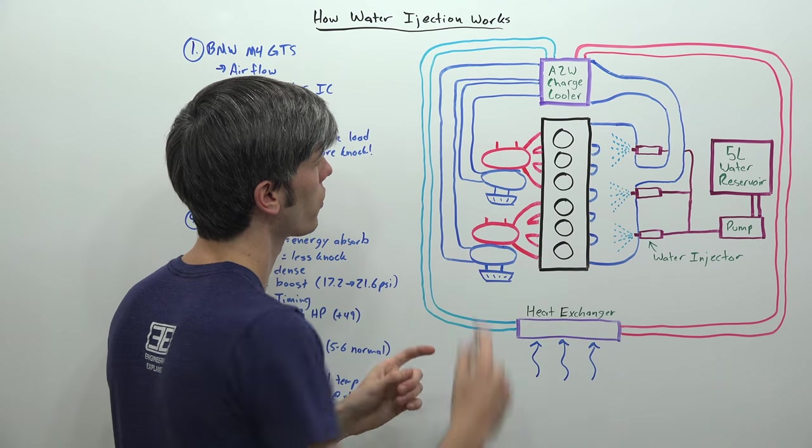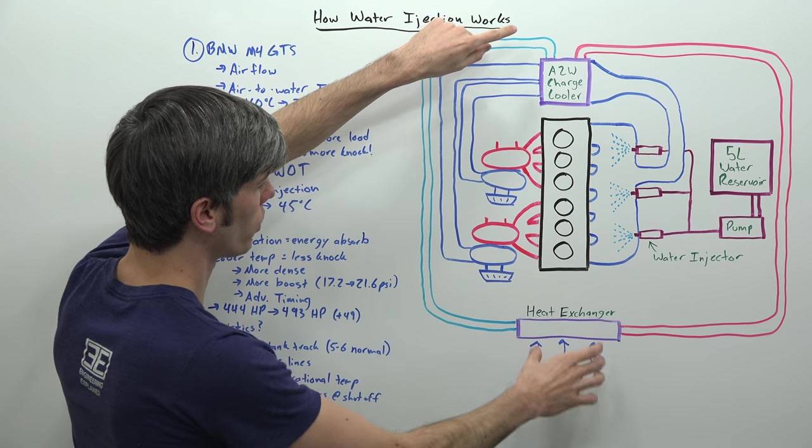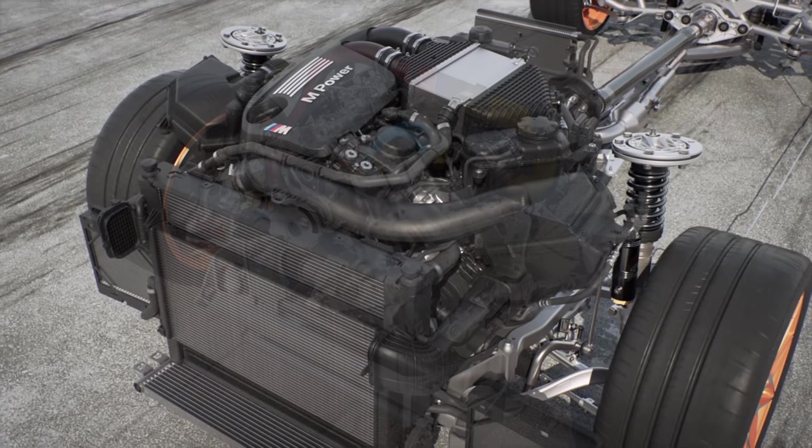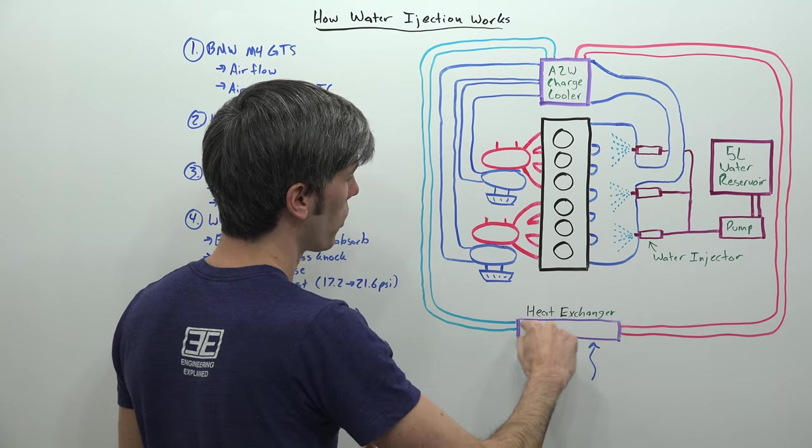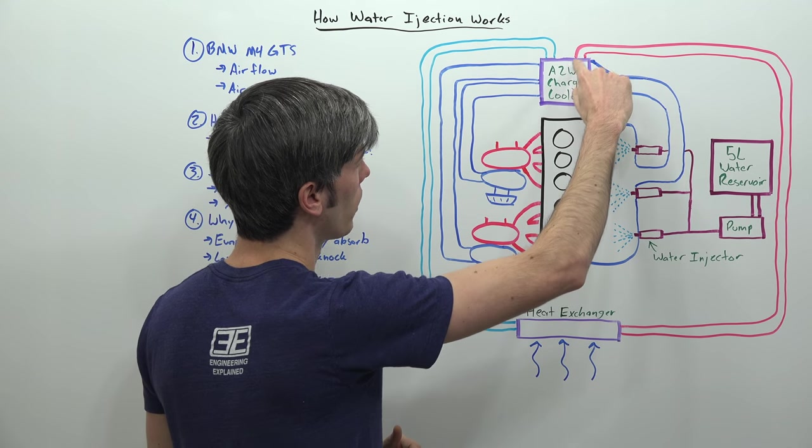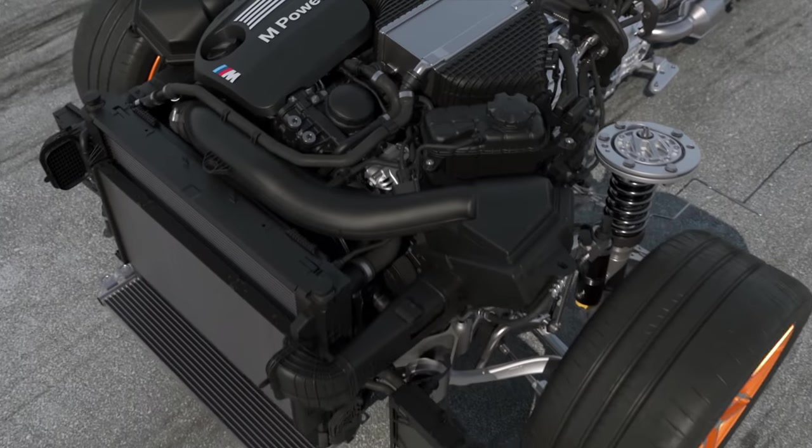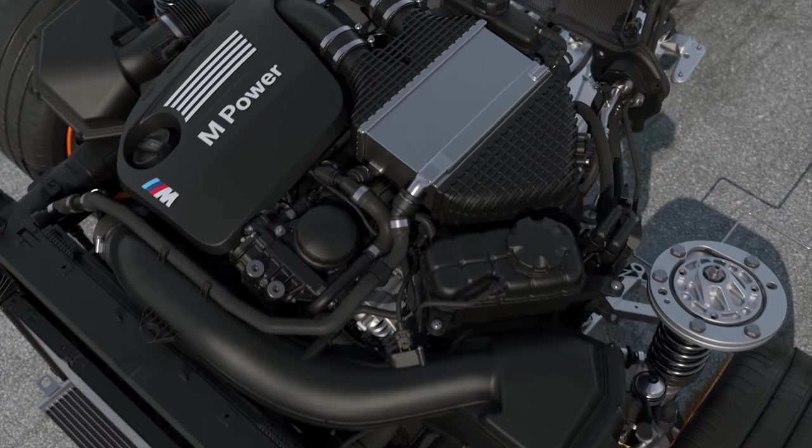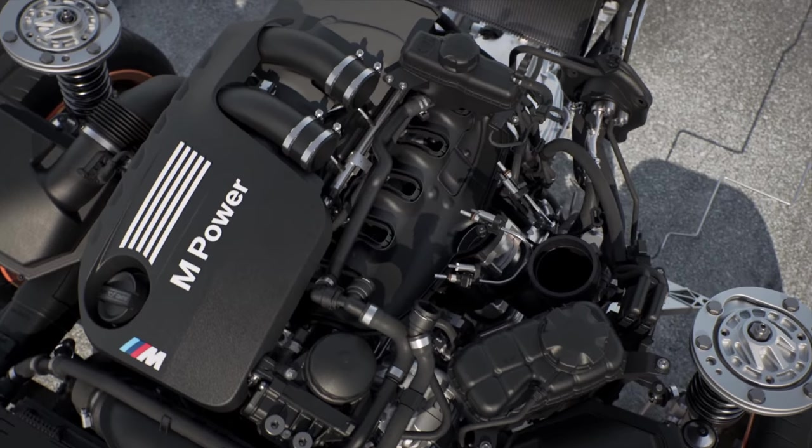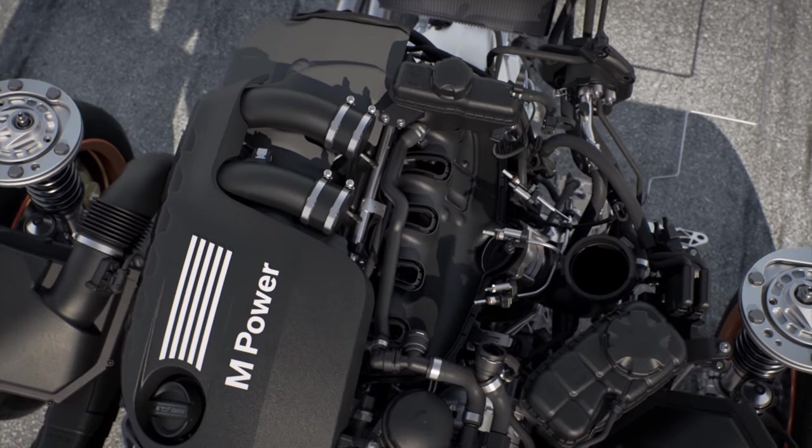It's then going to pass through an air to water intercooler. So you've got a heat exchanger with fluid flowing through it. You'll have a pump in line with this that will force that fluid to go through this intercooler and then back out once it's been heated from that compressed air. So that compressed air is passing through that air to water intercooler cooling down after it's passed through into your intake manifold and then into the engine.